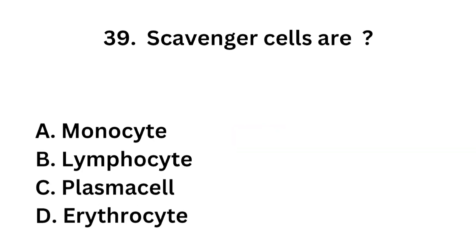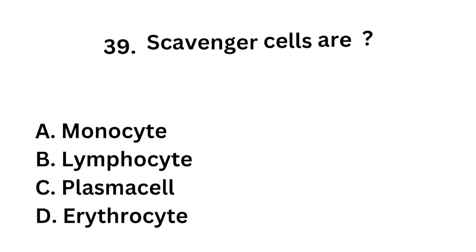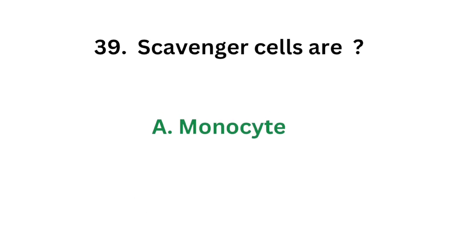Question number 39: Which cells are called scavenger cells? Option A: Monocyte. Option B: Lymphocyte. Option C: Plasma cell. Option D: Erythrocyte. The correct answer is Option A: Monocyte. Monocytes are also known as scavenger cells.